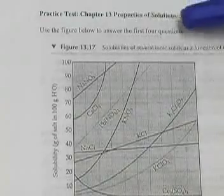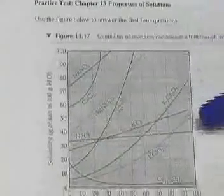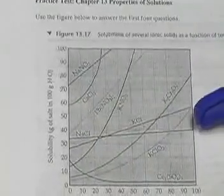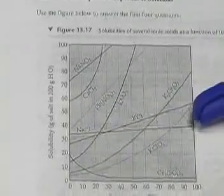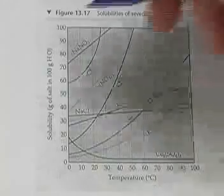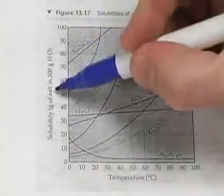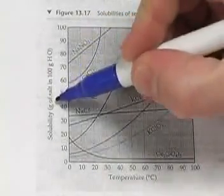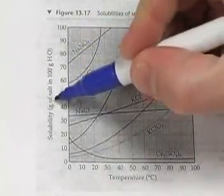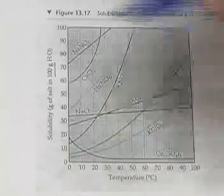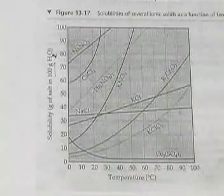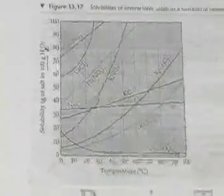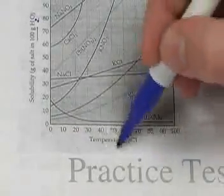The first four questions say to use this figure to help answer the question. It's a solubility curve showing the solubility of grams of a salt in 100 grams of H₂O. Down here it gives you the temperature in degrees Celsius.